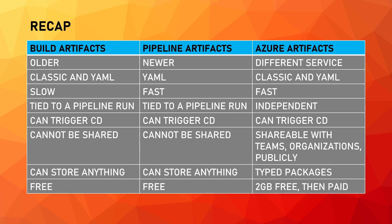Azure Artifacts is a completely different service. Packages stored in Azure Artifacts can be used in both Classic and YAML pipelines, and their upload and download is as fast as with Pipeline Artifacts because they share the same underlying technology. Being a different service, Azure Artifacts are independent from the pipelines that published them, but like the other types, can be used to trigger CD. They are the only type of artifact that can be shared with developers, even cross-organization, but they can only be typed packages. Finally, you get 2GB of space for free, but after that it's a paid service.